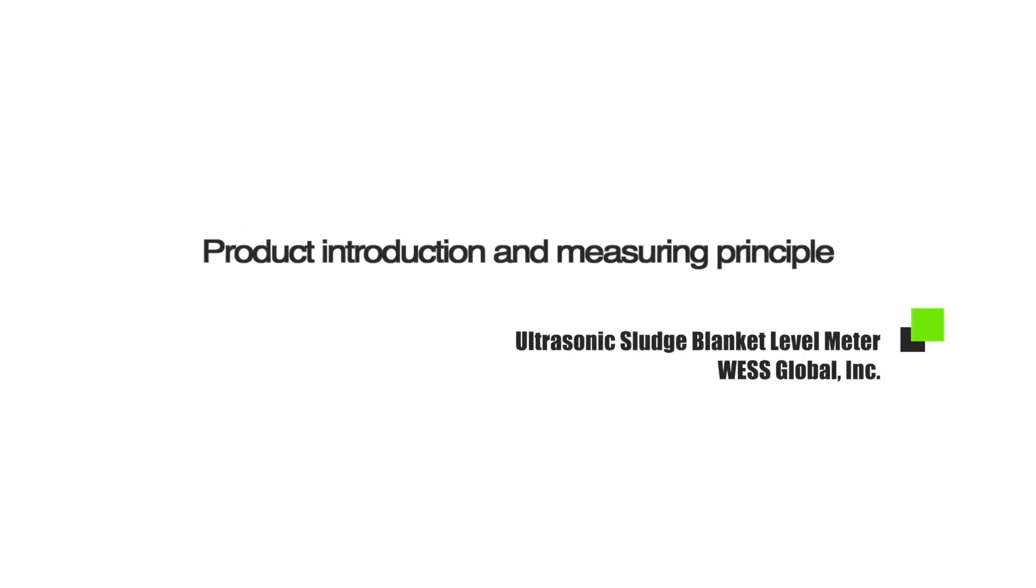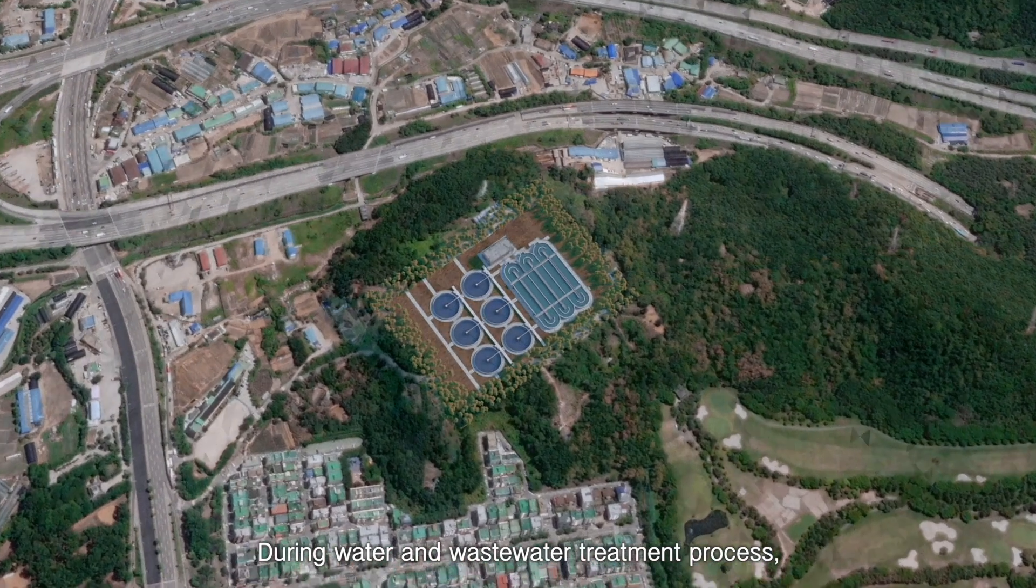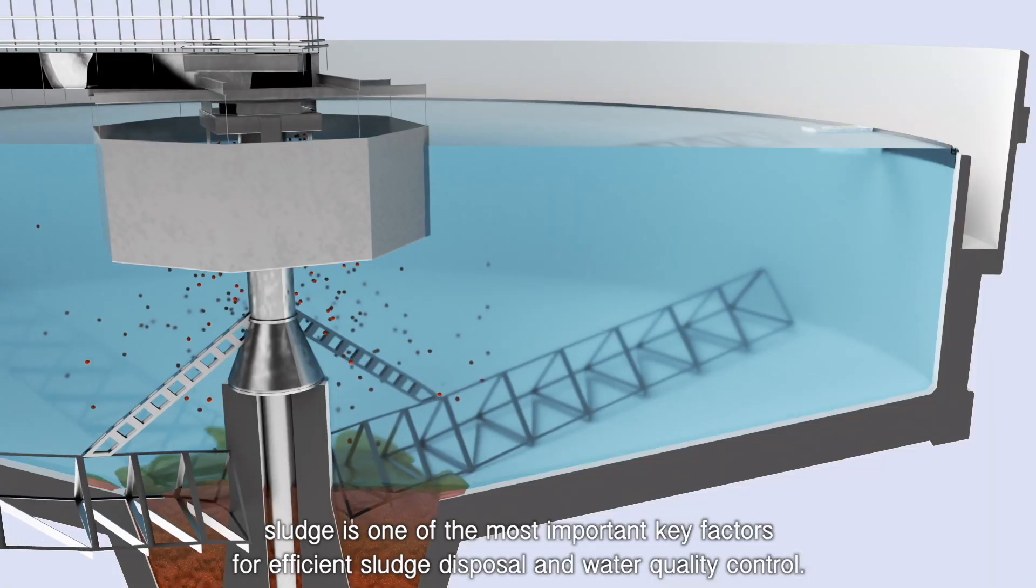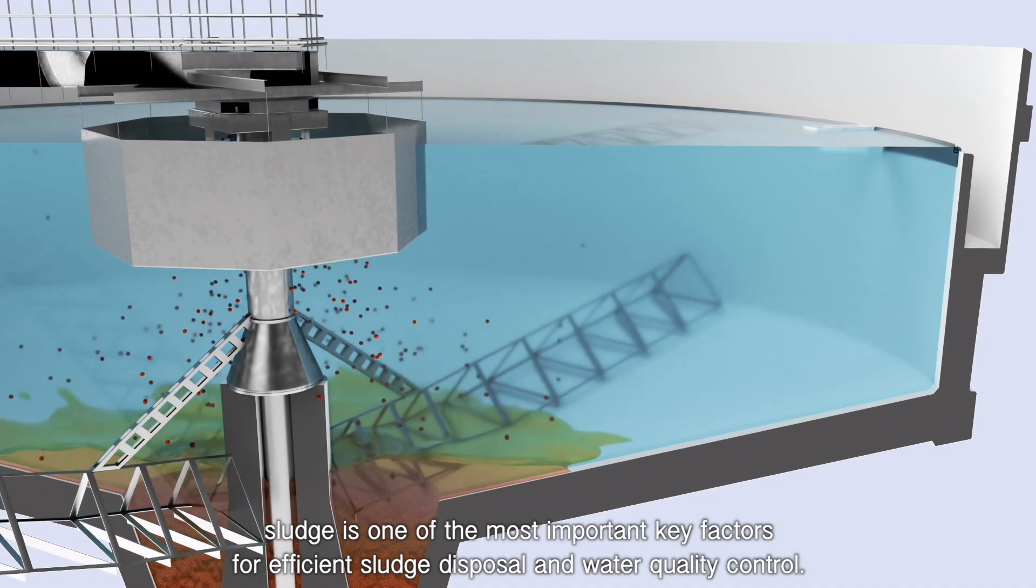Product Introduction and Measuring Principle. During water and wastewater treatment process, sludge is one of the most important key factors for efficient sludge disposal and water quality control.